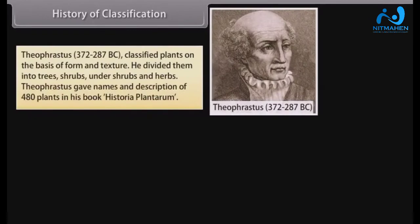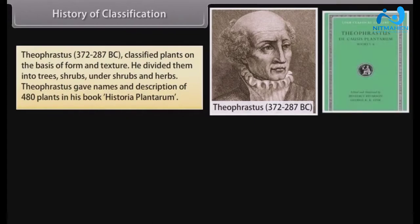Theophrastus (372–287 BC) classified plants on the basis of form and texture. He divided them into trees, shrubs, undershrubs, and herbs. Theophrastus gave names and descriptions of 480 plants in his book Historia Plantarum.